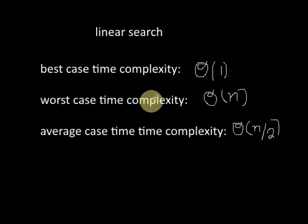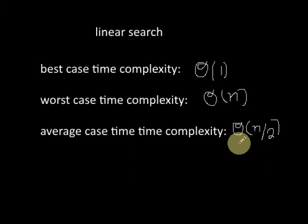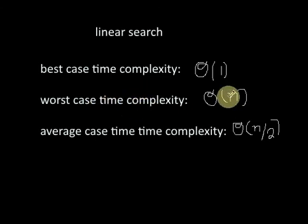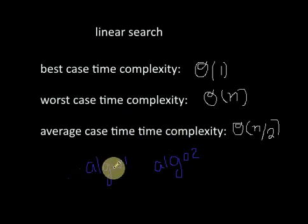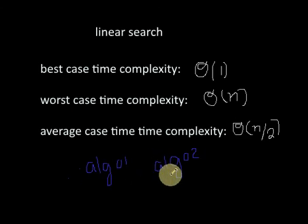So the best case time complexity of linear search is Θ(1), the worst case time complexity is of the order n, and the average case time complexity is of the order n/2. But for analyzing and comparing algorithms, the worst case time complexity is considered. For example, to compare algorithm one and algorithm two, we find the worst case time complexity of both algorithms and compare them — whichever algorithm performs better in the worst case is considered to be the better algorithm.